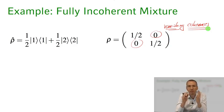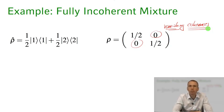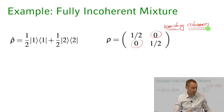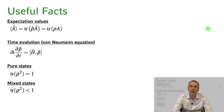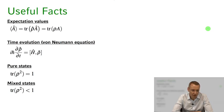So we have the same diagonal elements — the same populations of being in state one and two — but we've lost any coherences. That means we've also lost any ability to do interference experiments with such a state, as we'll come back to later in the course. Remember: the coherences tell you something about how well you can actually perform interference experiments with a given state.